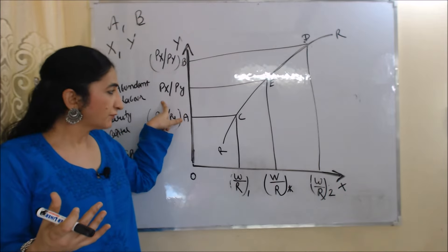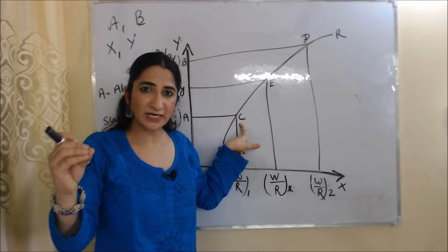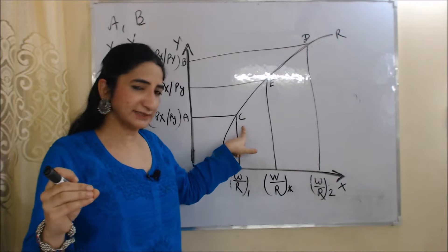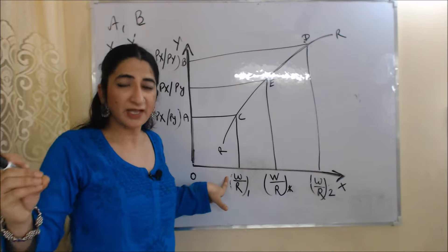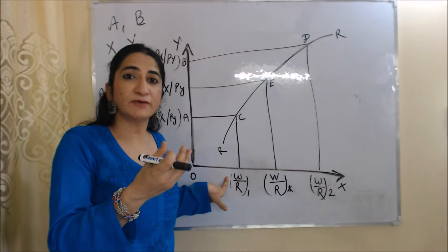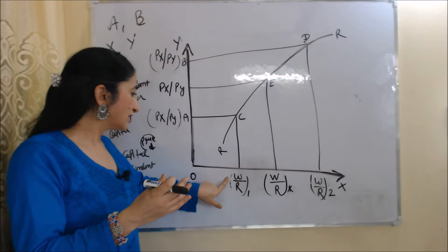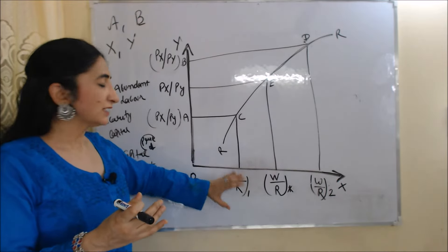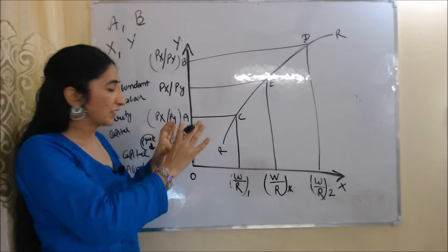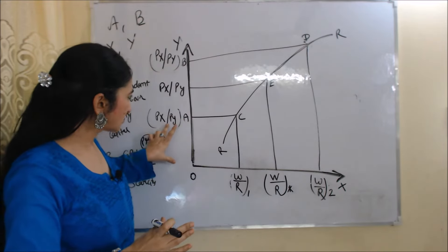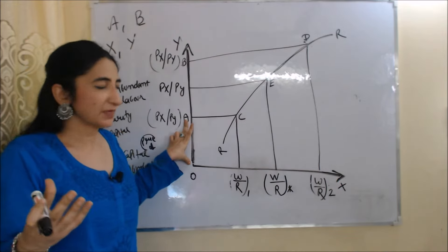Before trade, the equilibrium point of country A is C. Before trade, wage rates are very low in country A because wage rate is the price of labor and country A is a labor abundant country. If price of labor is low, that's why price of labor intensive goods X is also low. This ratio Px/Py_A represents the price of good X in country A.